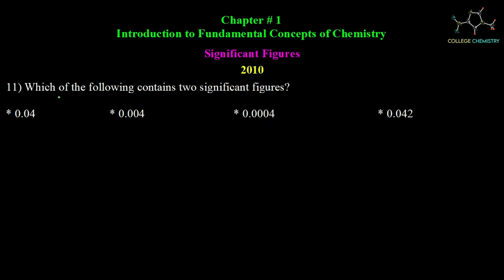Question number 11: which of the following contains 2 significant figures? The number 0.04 has only 1 significant figure, so that is not the answer. The correct option is the one with 2 significant figures.